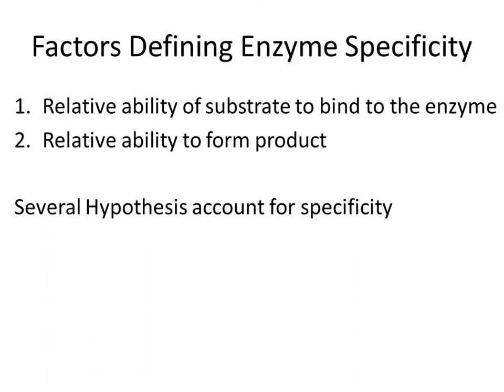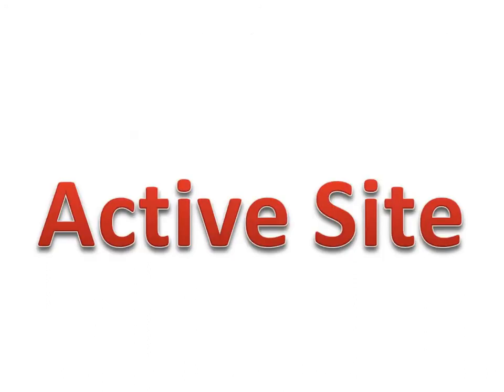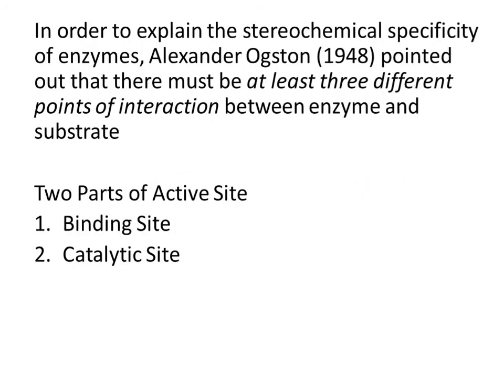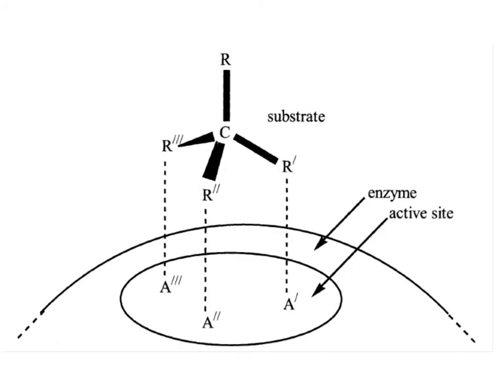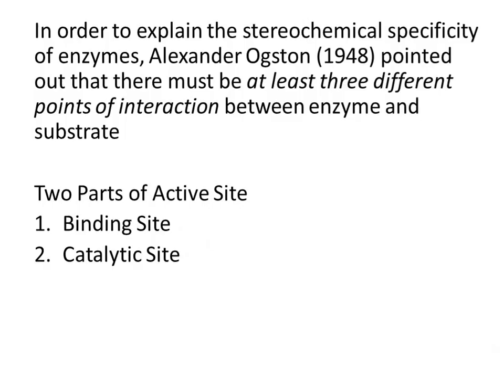In some cases, contribution from more than one of the factors appears to be present. The specificity of enzyme is due to the presence of a specific active site. Now we will see what is the active site. In order to explain the stereochemical specificity of enzymes, Alexander Ogston in 1948 pointed out that there must be at least three different points of interaction between enzyme and substrate. These interactions can have either a binding or a catalytic function.